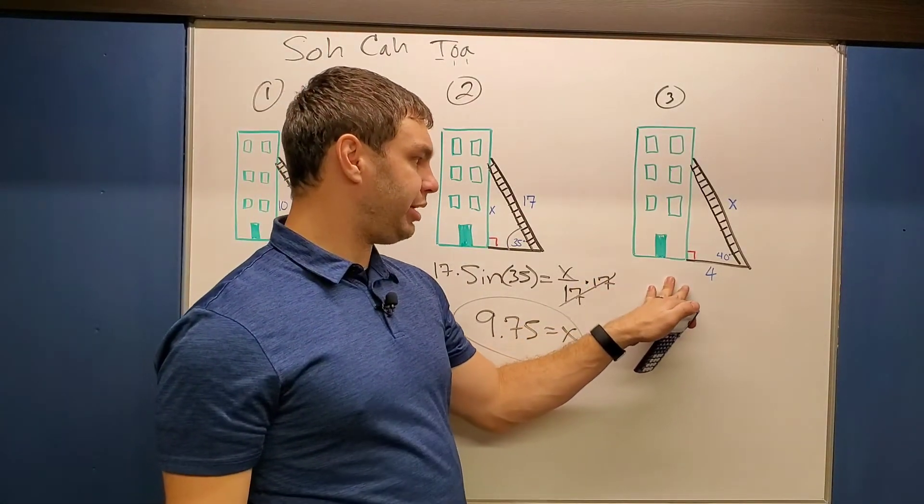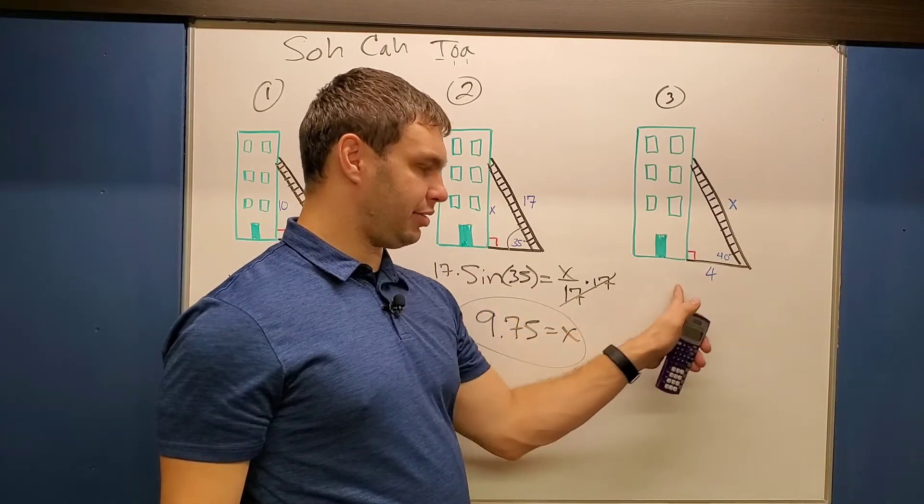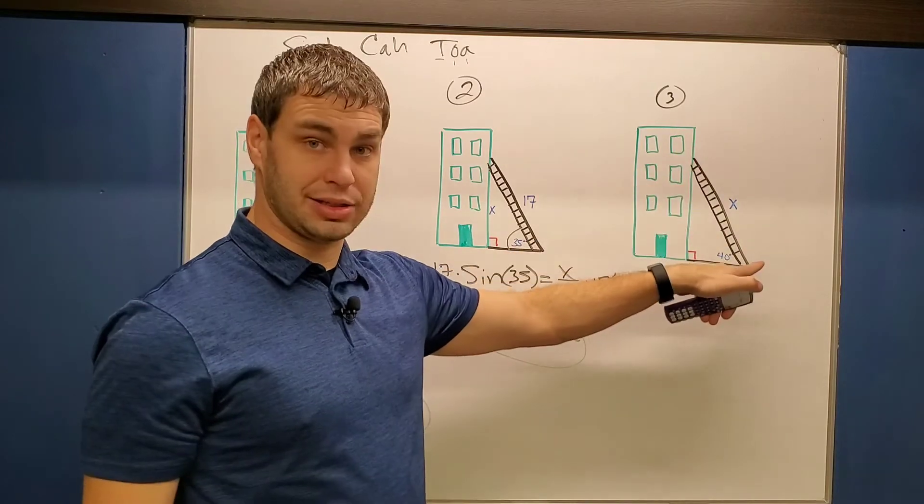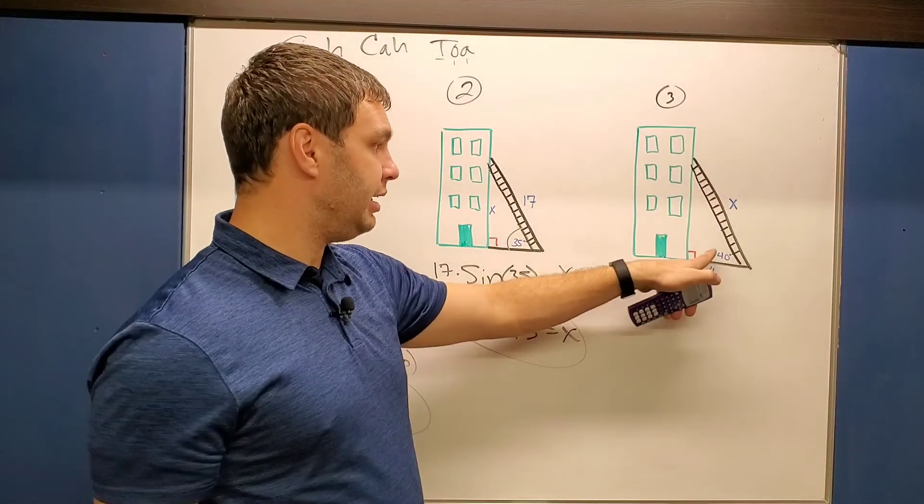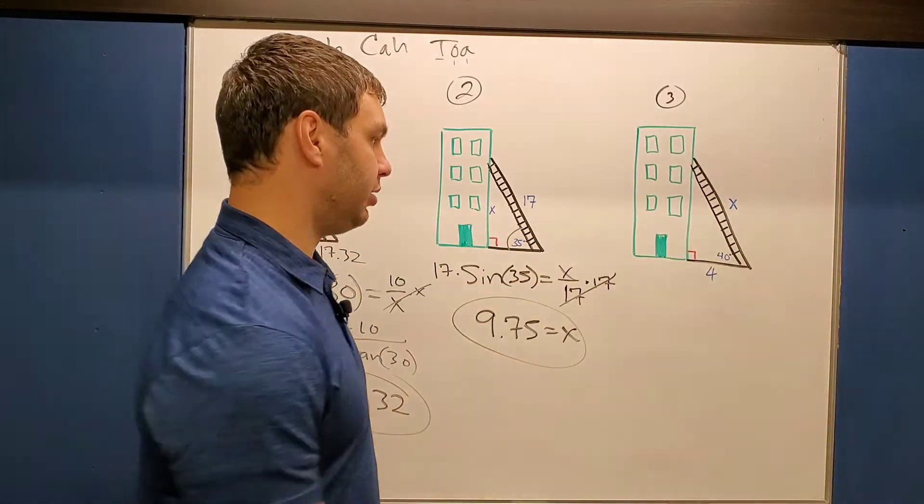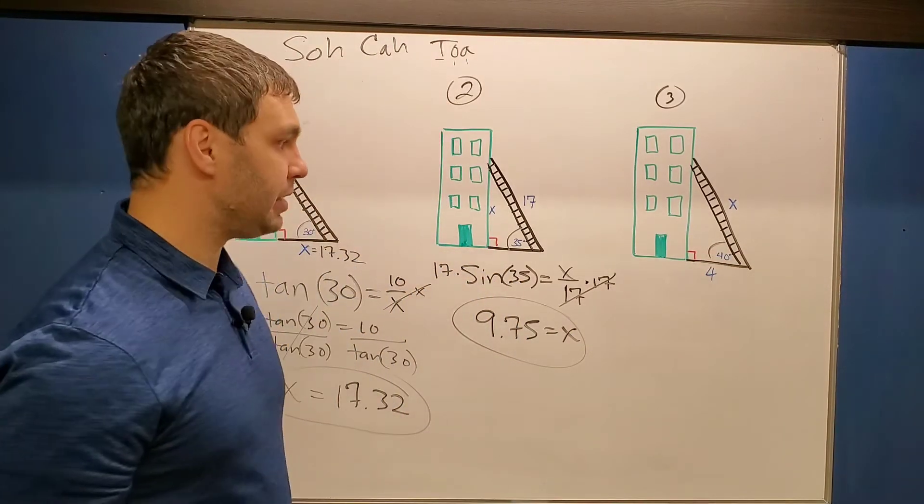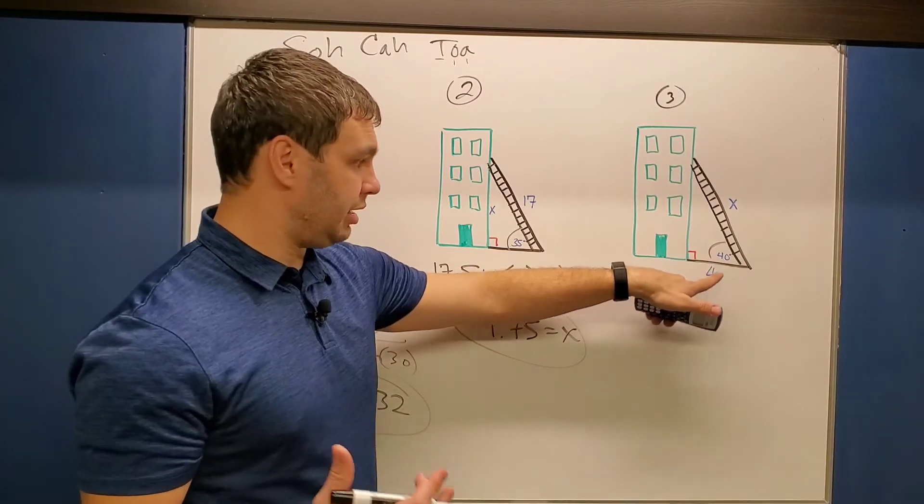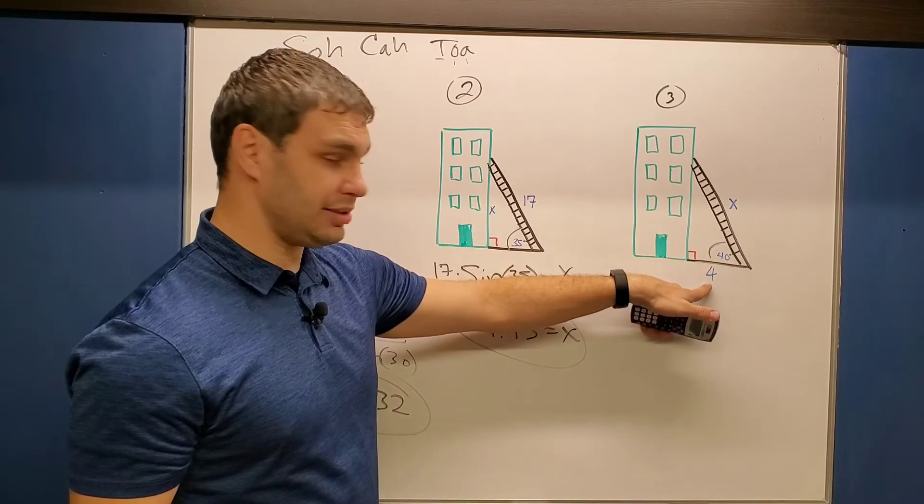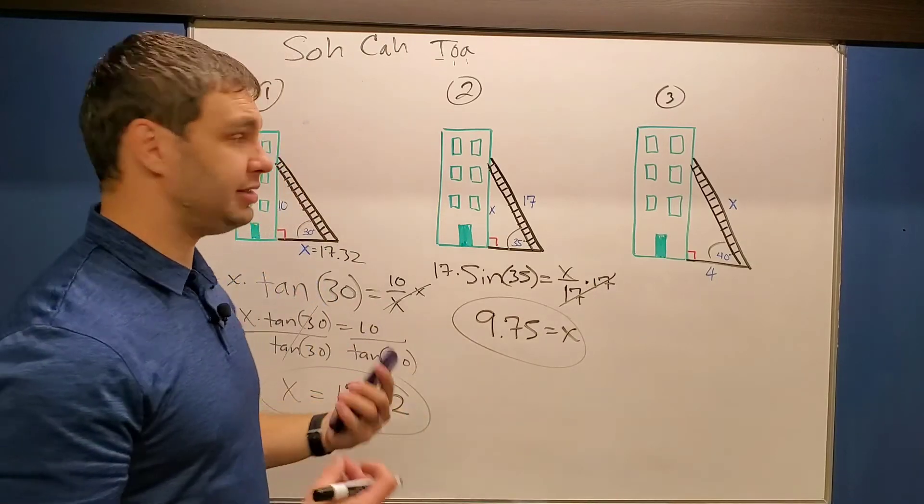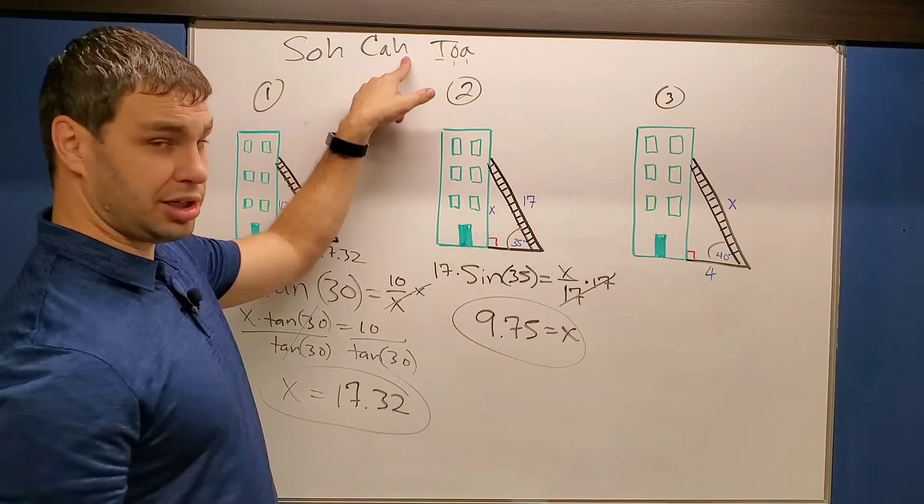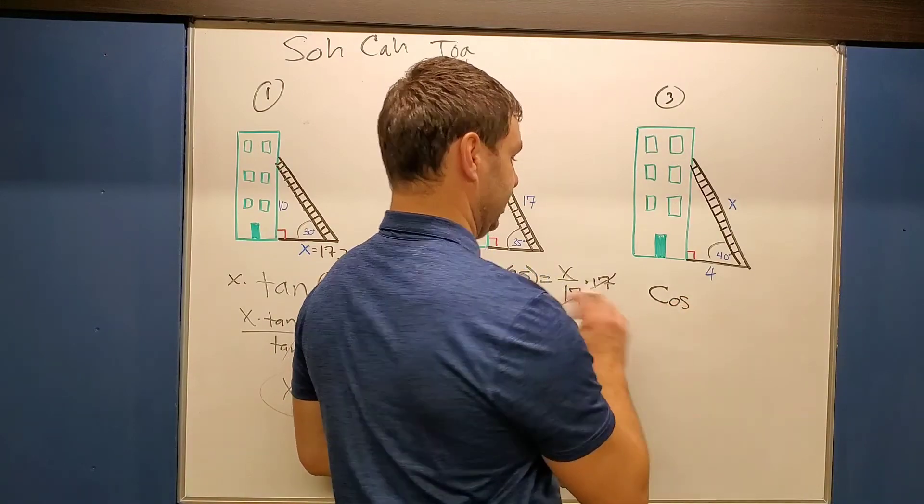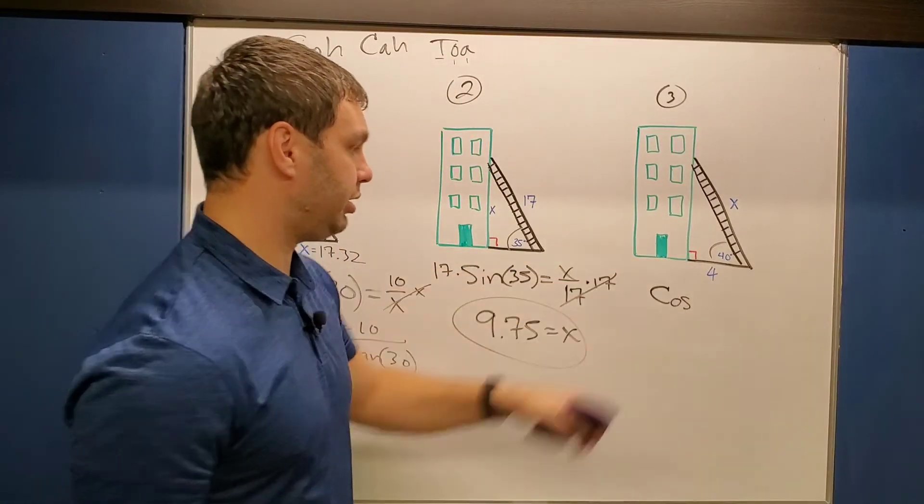Last one, number three over here. This time we have the length along the ground that the ladder is between the building, it's four. I also have the length of ladder as X that I'm trying to find, and I have a 40-degree angle between the ground and the ladder. So compared to the 40 degrees, I have information on its adjacent side as well as its hypotenuse. Adjacent and hypotenuse is cosine. So we're getting to use one of each in this video.